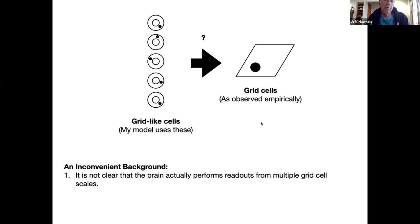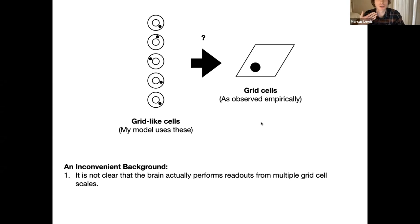Even if those connections did exist, it doesn't seem to be enough of them, and they have problems because the different scales don't work. If they did exist, I would still try to see what I could do with six to eight modules, but it doesn't seem like there are very many of them. So this idea of a multi-module grid cell readout in 2D seems biologically implausible — you can't just assume it's there.